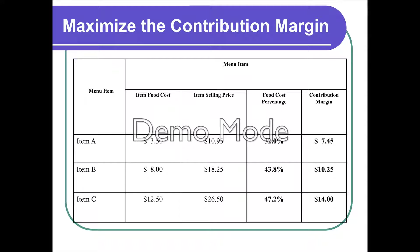Let's compare these approaches with three menu items. Item A has a selling price of $10.95, a cost of $3.50, and the lowest food cost at 32%. Item C has a cost of $12.50 and sells for almost $27, with a high food cost of 47%. But if you served 100 people Item A, you'd have $745 in contribution margin. Serving everyone Item C gives $1,400 — nearly double. You bring in twice as much money per guest even though the food cost percentage is higher.